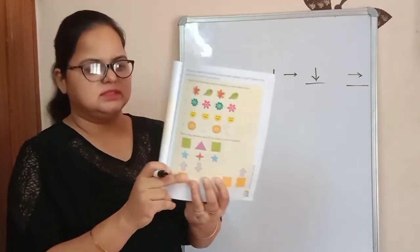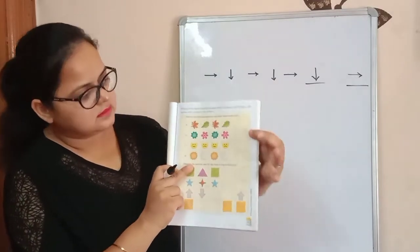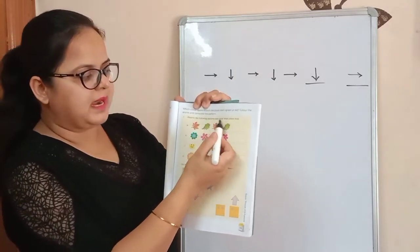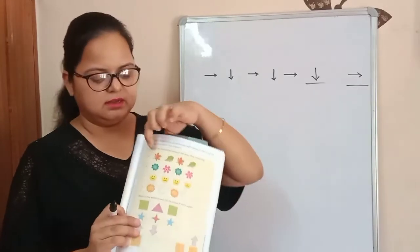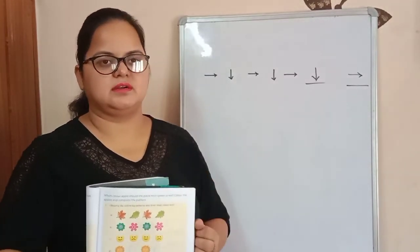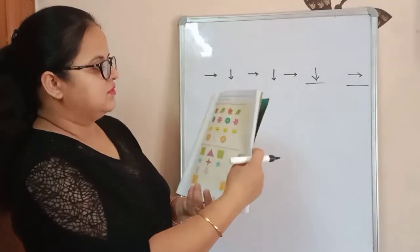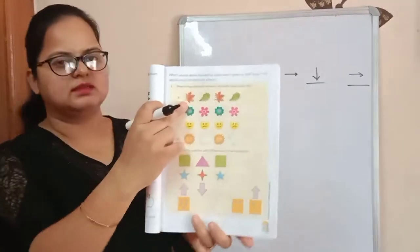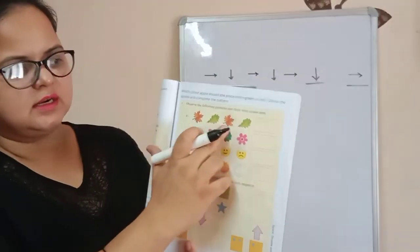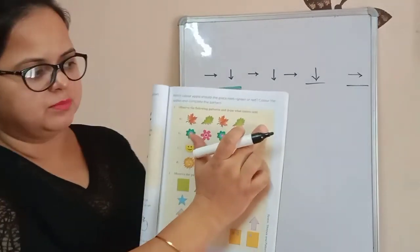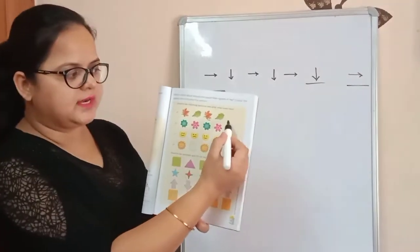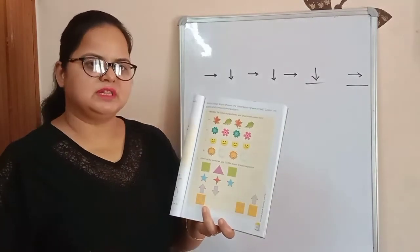So here you can see the work is given for the patterns. Observe the following patterns and draw what comes next. You have to observe these patterns and fill the last box with the correct pattern. Which shape will you draw here? Here is this kind of leaf with orange color, and another shape of leaf with green color. Again orange, green. Here you will make this kind of leaf with orange color. You can draw it now, but fill the color after class.